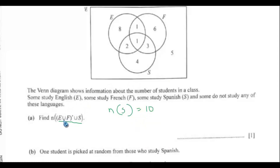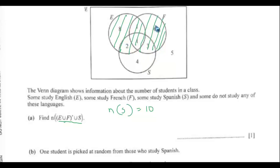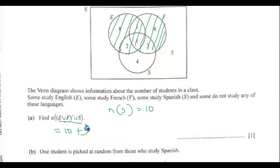For the set (E ∪ F)′, we need those outside the English and French union. The Spanish-only region and the outside region are already covered. The shaded region of E ∪ F contains certain students. Those outside are the Spanish-only students (already counted as 10) plus 5 additional students outside all sets. So (E ∪ F)′ = 10 + 5 = 15.